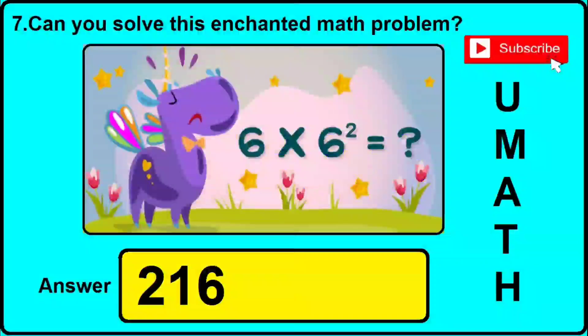In version 3 of question 7, it is given: 6 x 6 squared equals what. The correct answer for this question will be 216.